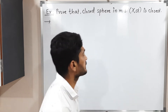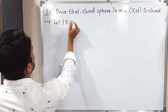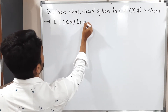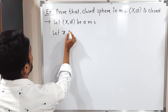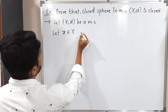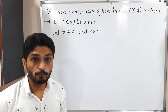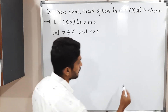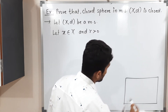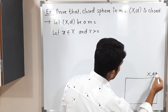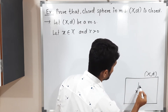Let (X, d) be a metric space. Let X belong to capital X be any point, and let R be a positive real number, which is obviously the radius of the closed ball. So we have metric space (X, d) and we have taken one point X and radius R.